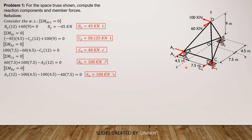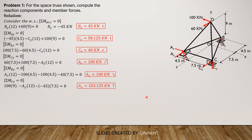AY is the last unknown, so we sum up moment about CZ equals 0. AY is upward but negative in the positive sense, so: negative AY times 12, plus 100 times 9, then minus BY which is negative 45 times 7.5, equals 0. Since 60 is parallel to CZ it is not involved. Solving, AY is 103.125 kN upward.